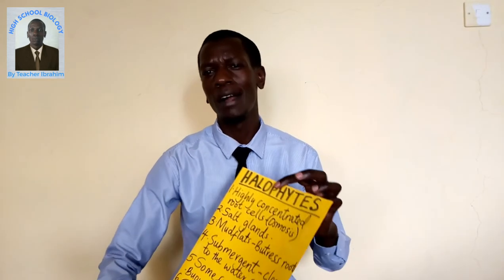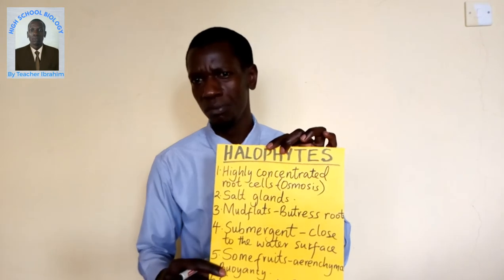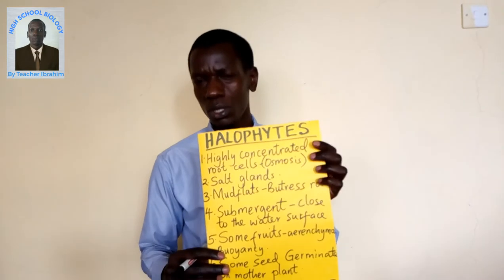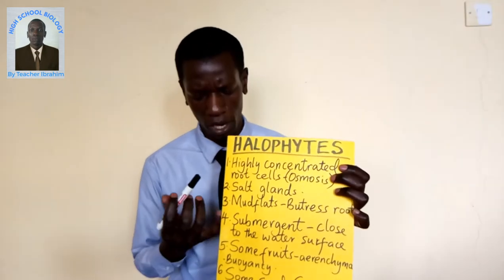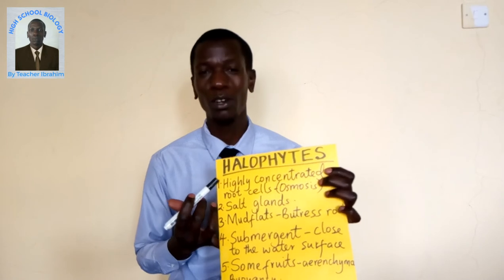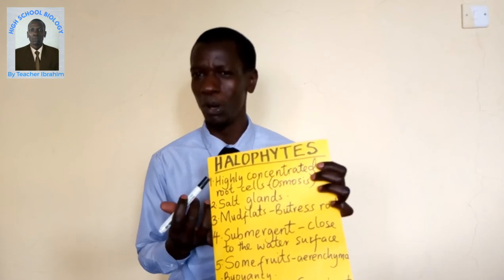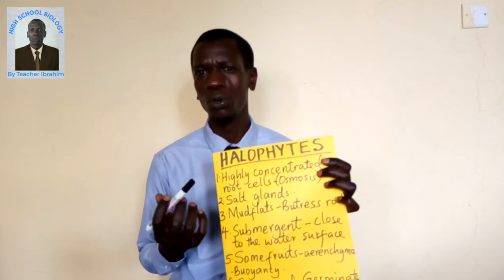Number one: they have root cells which are highly concentrated to enable them to absorb water through the process of osmosis.